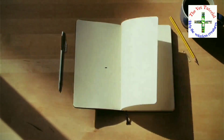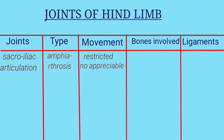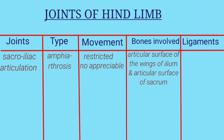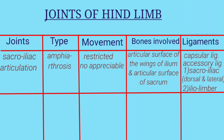First is sacroiliac articulation. The type of joint is amphiarthrosis. Movement is restricted in young and no appreciable movement in adults. Bones involved are the articular surface of the wings of ilium and articular surface of sacrum. Ligaments are capsular ligament (less developed) and accessory ligaments which are sacroiliac dorsal, sacroiliac lateral, and iliolumbar ligament.